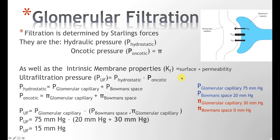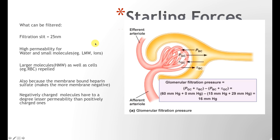Another thing to keep in mind is the intrinsic membrane property, designated KF, which has two variables: the surface area — whether it is large or small — and the permeability of the membrane — whether the membrane is permeable to a certain solute or not. So what can get filtered? Remember the filtration slits we mentioned when discussing the foot processes of the podocytes.